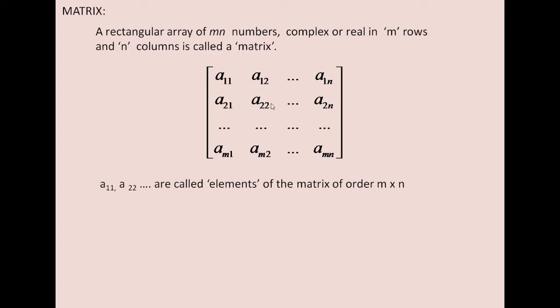This is row 1, row 2, this is row M, column 1, column 2, you have column N.